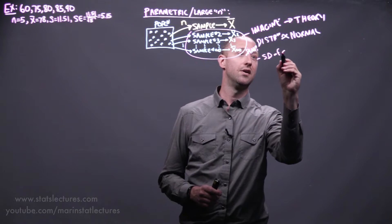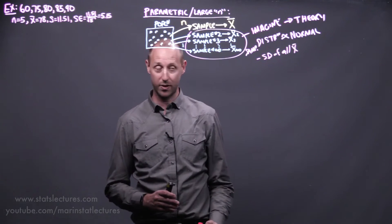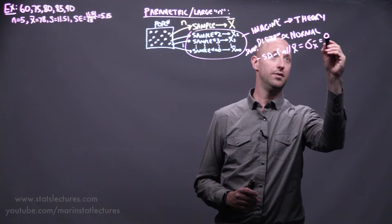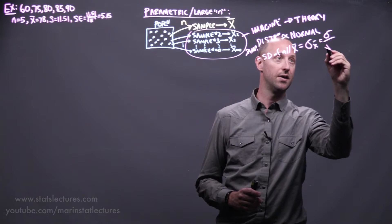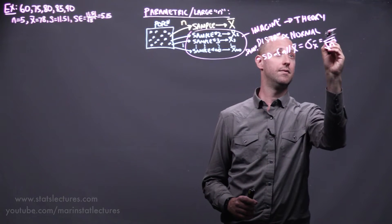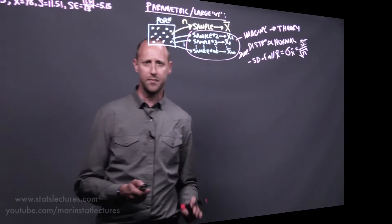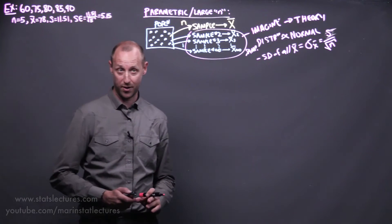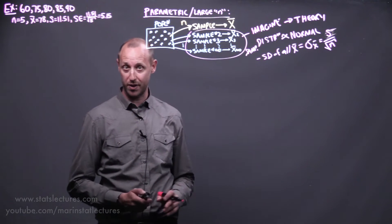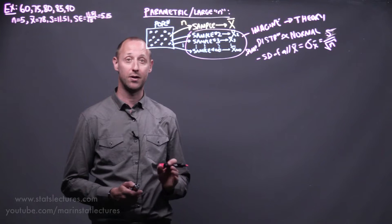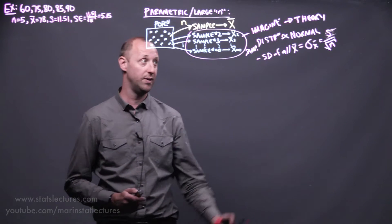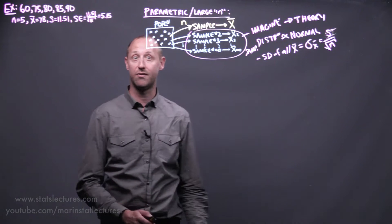The standard deviation of all these estimates — these imaginary estimates we could get — mathematical theory tells us this happens to equal the standard deviation of the individuals divided by the square root of the sample size, or in the case of sample data, the sample standard deviation. So all these results we get from mathematical theory — they'll be approximately normally distributed under certain conditions, the main one being a large sample size.